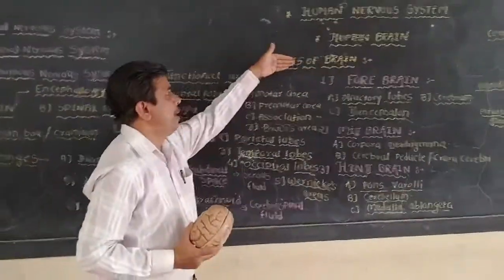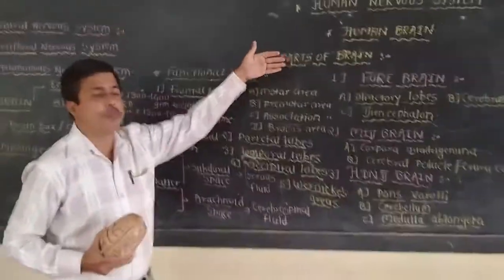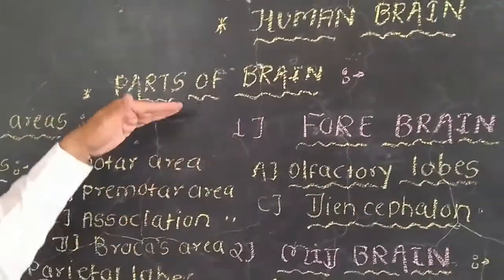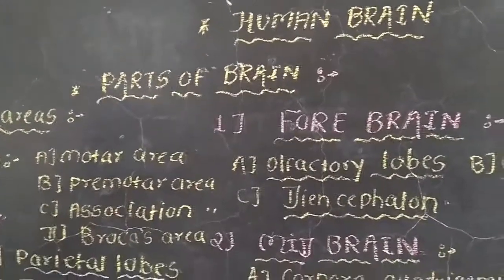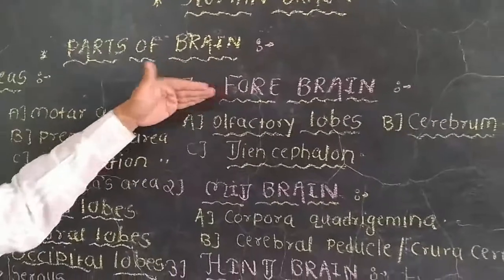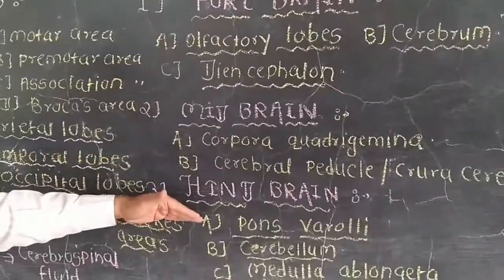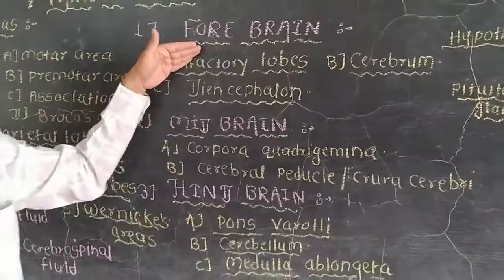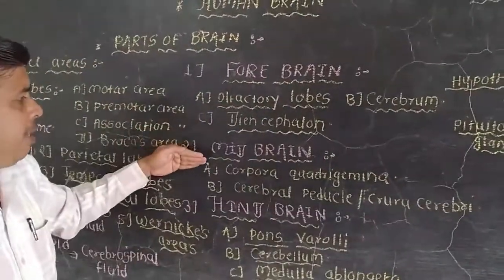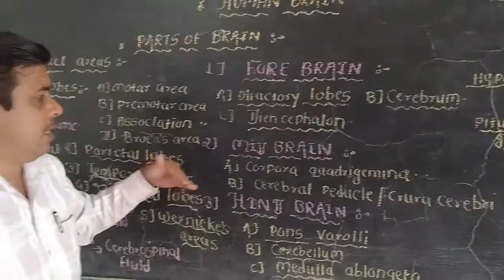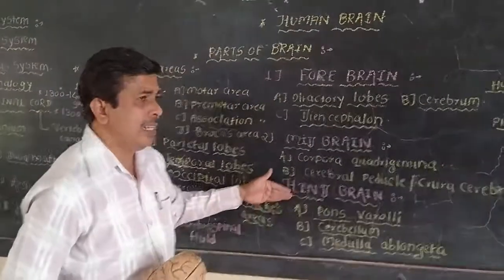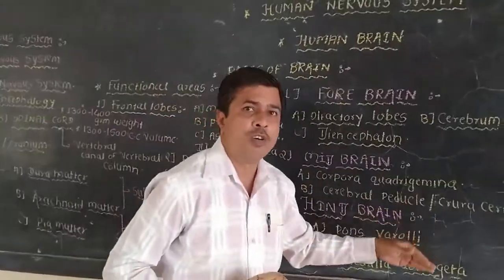Now let us look at the parts of the brain. The complete brain is divided into three main parts: the forebrain, the midbrain, and the hindbrain. The forebrain is also known as the prosencephalon, the midbrain is also known as the mesencephalon, and the hindbrain is also known as the rhombencephalon.